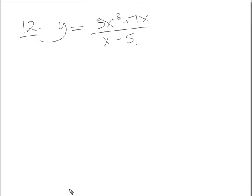OK, number 12 then. y equals 3x cubed plus 7x over x minus 5. We've got a cubic on top, order 3. Underneath we've got a linear function, which is of order 1. It's like the fraction 3 over 1, which is top-heavy. So we need to do the division to simplify it.